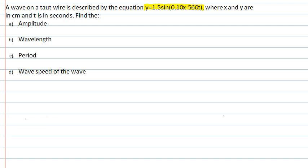Let's start by considering this equation a bit more carefully. So what it's saying is that y, which is the vertical displacement of the wire, is a function of x, the horizontal position along the wire, and t, so it varies over time. And it's given by this expression: 1.5 sin(0.1x - 560t).